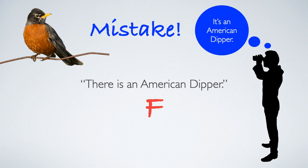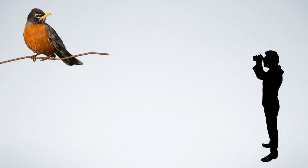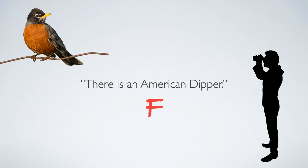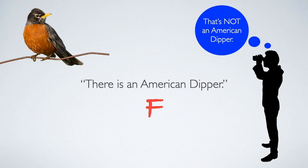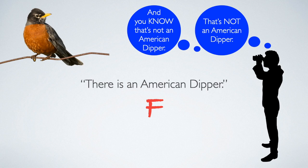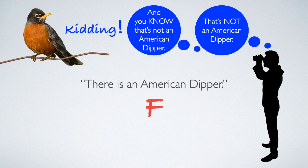But now change the example. I still say, 'there is an American dipper,' and it's still a false statement. But this time, I don't actually believe it. Am I lying? Maybe. Maybe not. Let's say I have another belief — that you know it's not an American dipper, and you won't believe me, because you know darn well what a robin looks like. In this case, I'm not mistaken and I'm not lying. I'm joking, or teasing. For instance, maybe you misidentified a bird earlier and I'm just giving you a hard time. So when you say something false, it's not always a mistake or a lie.